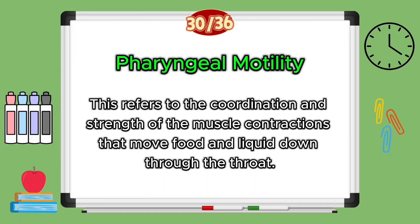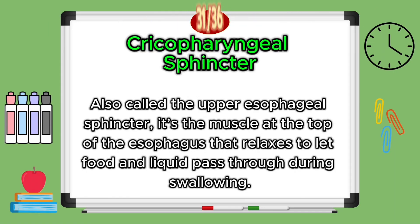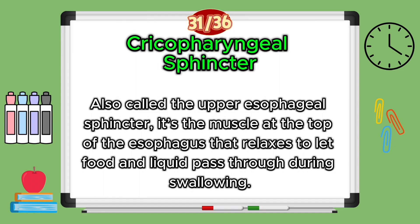Pharyngeal motility refers to the coordination and strength of the muscle contractions that move food and liquid down through your throat. The cricopharyngeal sphincter — also called the upper esophageal sphincter — is the muscle at the top of the esophagus that relaxes to let food and liquid pass through during your swallow.